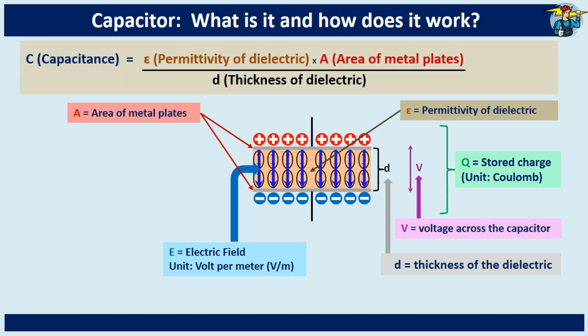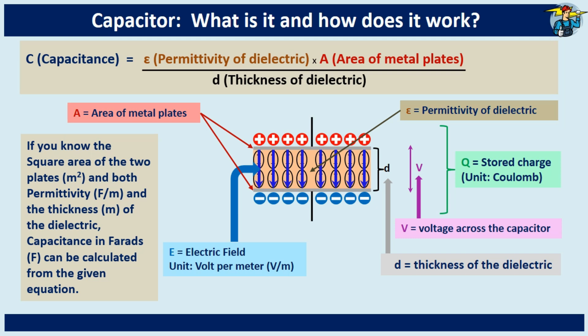Then the capacitance is equals to permittivity of the dielectric multiplied by square area of the metal plates and divided by thickness of the dielectric. If you know the square area of the two metal plates and both the permittivity and the thickness of the dielectric, then the capacitance can be calculated from the given equation.